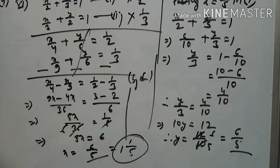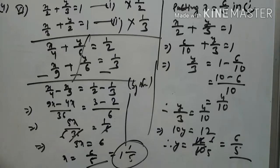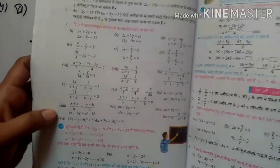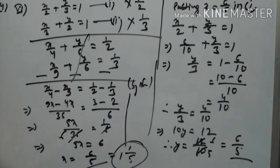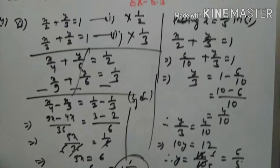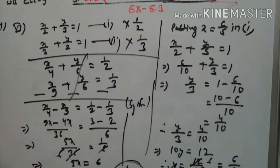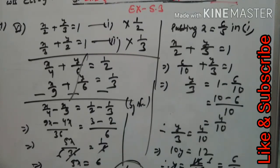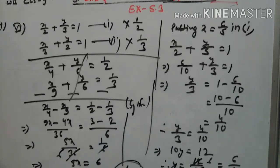So x = 6/5 and y = 6/5 is the required solution for question number 6. We will stop here for today and continue with the remaining questions in the next video. Please keep watching our channel, comment if you like the teaching method, subscribe for notifications, and keep practicing. Bye bye!